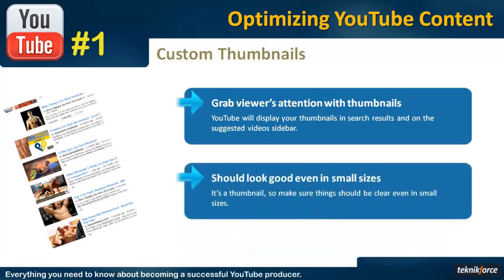Now the rules. The first rule is the thumbnail should look good even in small sizes. YouTube lets you upload a big sized thumbnail, but you should not fall into the trap of making a thumbnail that looks good only in the big size, because depending on the device, the thumbnail will be shown differently to the viewer. So make sure it looks good in the suggested videos list on the side and in the search results, as these are the two most important places.